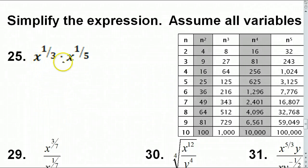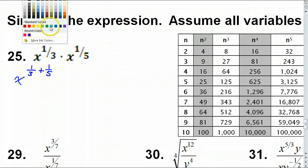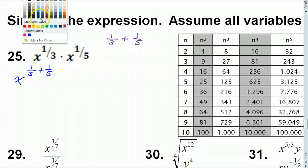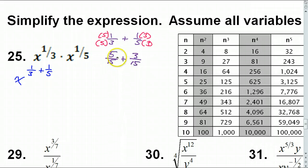Number 25: if the bases are the same you can add the exponents. So we are doing X to the 1/3 plus 1/5 power. I need like denominators, so I multiply by 5 to make 15 and multiply by 3 to make 15. That gives me 5/15 plus 3/15 which makes 8/15.